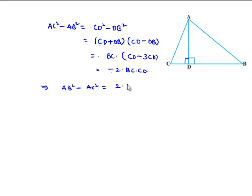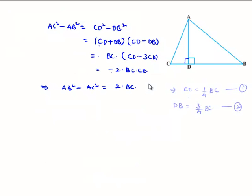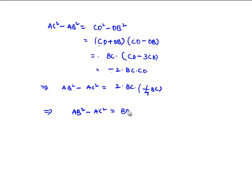Then we get the equation as AB square minus AC square is equal to 2 times BC, and we can write that CD is equal to one-fourth times BC from equation 1. So finally we got that AB square minus AC square is equal to BC square divided by 2.